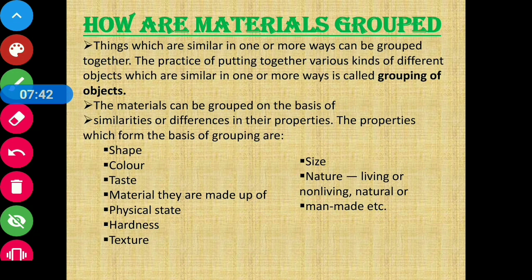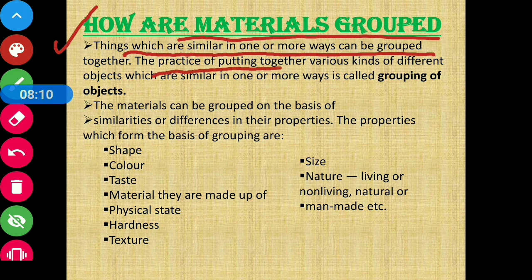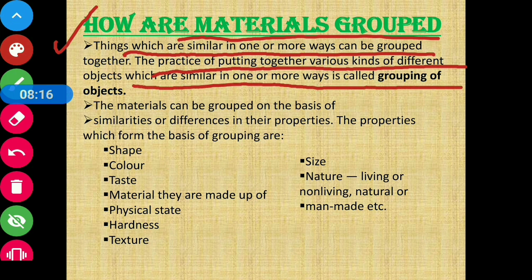Moving on to our next topic: how are materials grouped? Things which are similar in one or more ways can be grouped together. The practice of putting together various kinds of objects which are similar in one or more ways is called grouping of objects.